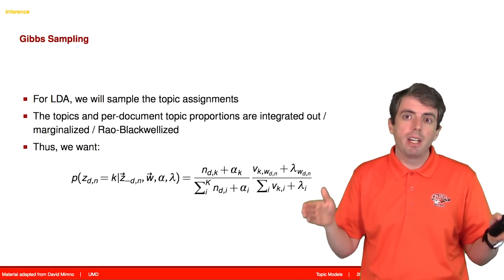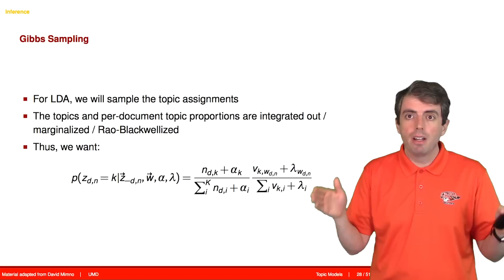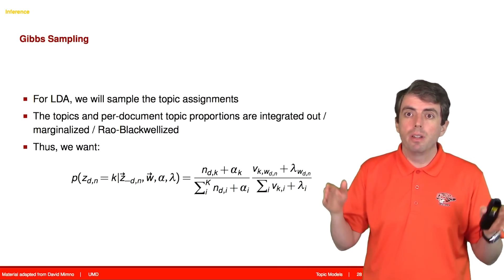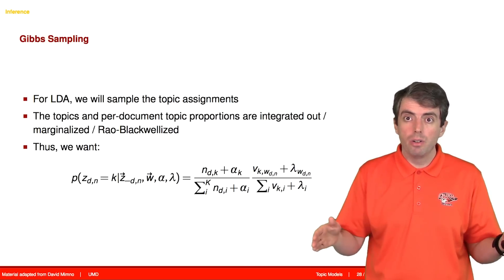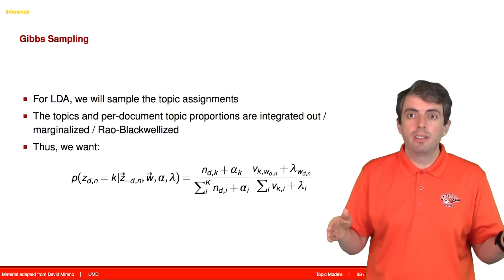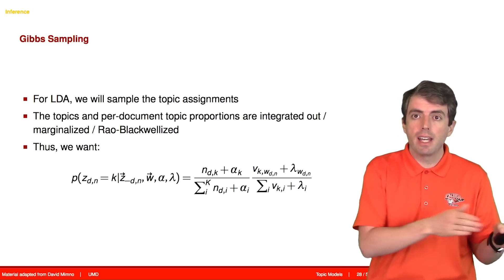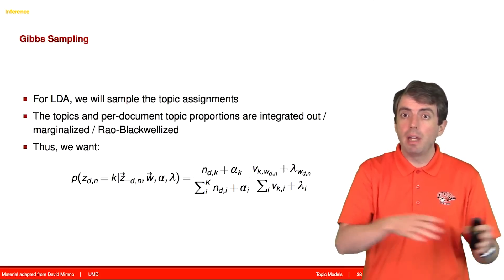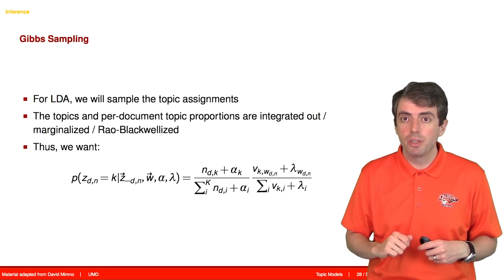This is going to have a probability of that word taking on each of the k topics. And so this vector will encode how likely this word is to go to each of the k different topics. And then we will choose which topic it gets from that conditional probability distribution.